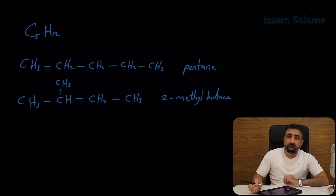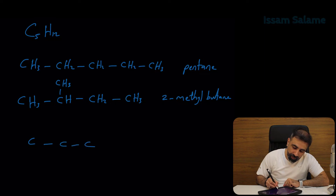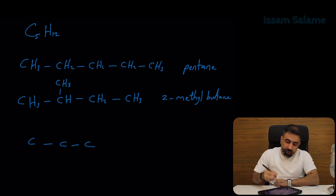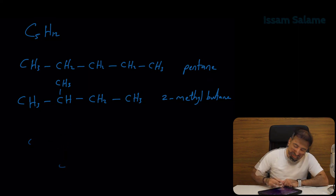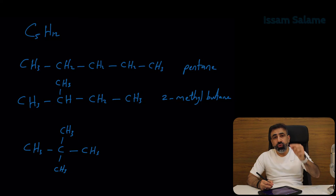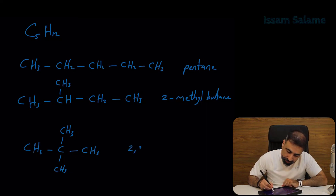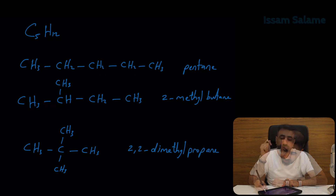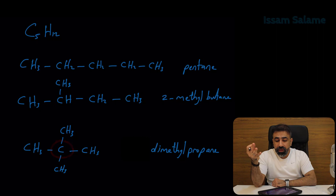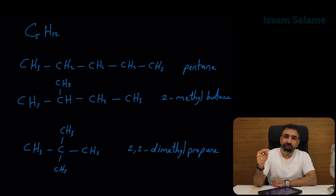What if we draw three carbon atoms in a chain? We cannot add groups at the end carbons, so there's only one place to add the two missing carbons — one carbon here and one carbon here. The name is 2,2-dimethylpropane. You can simply call it dimethylpropane because the only position for the two methyl groups is at the center carbon. So we can have only three structural isomers for C5H12, and pentane was one of them.